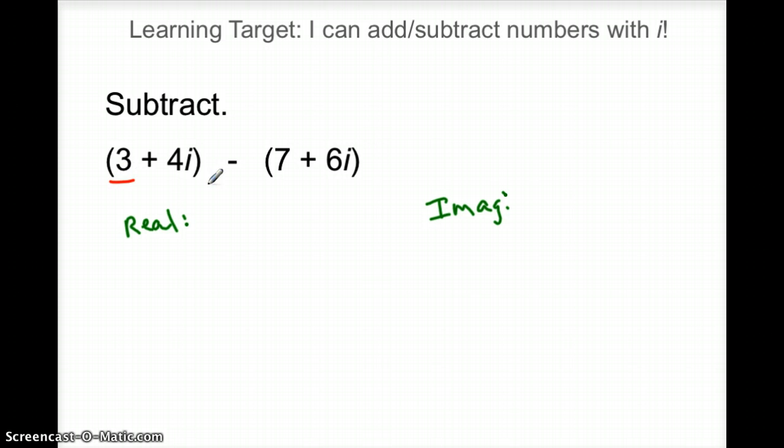So the real stuff that we're going to subtract, we're going to do 3 minus, notice our sign changed, 3 minus 7 in the real part. And then the imaginary stuff, 4i, again it changed to minus 6i.